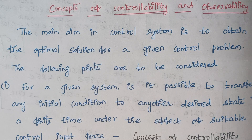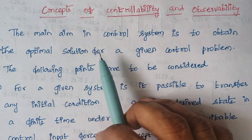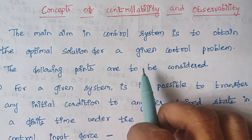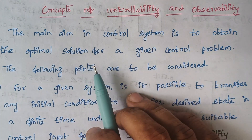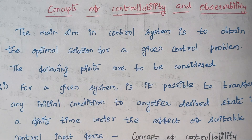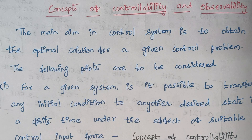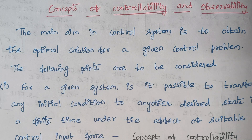Hello viewers, I am Kausalya. Today's topic is concepts of controllability and observability. The main aim in control system is to obtain an optimal solution for a given control problem. The main aim of a control system is to give an accurate output and also to maintain the system in a stable state.